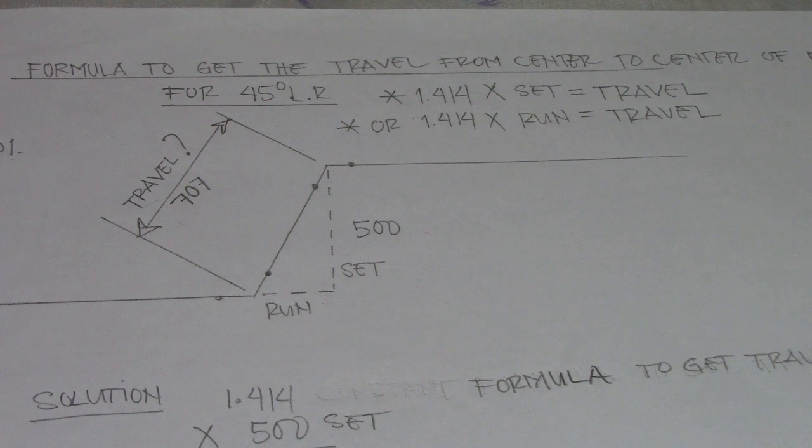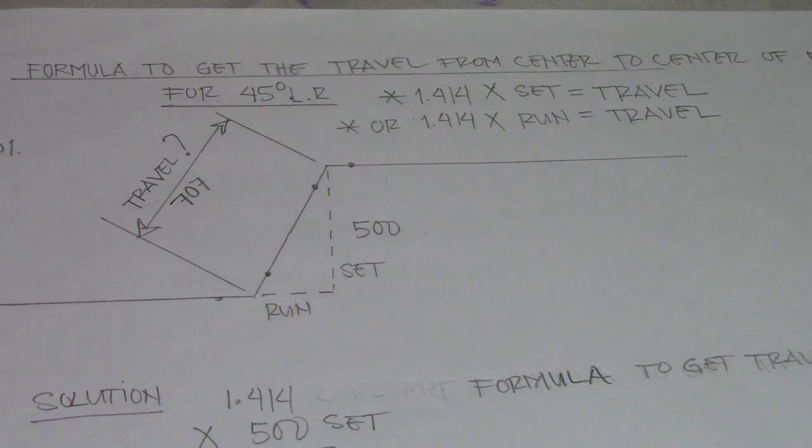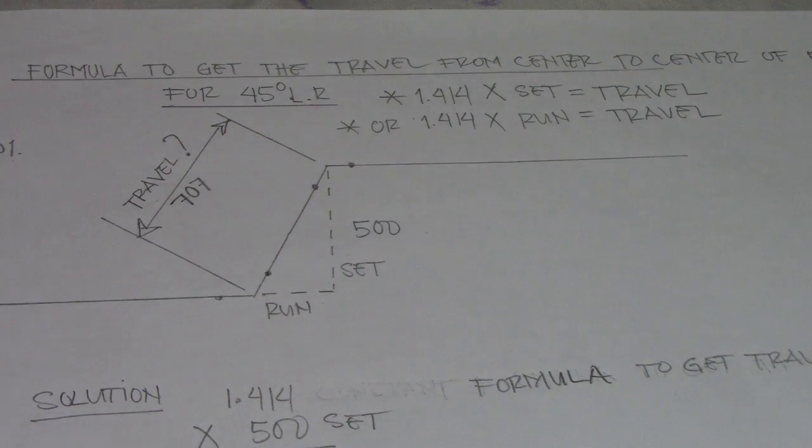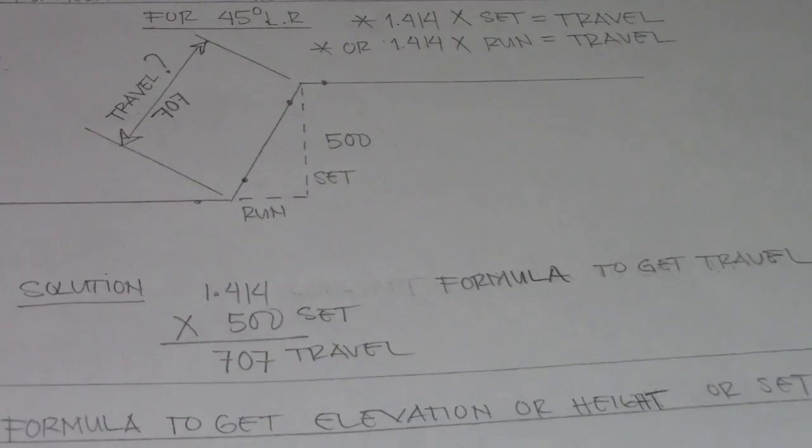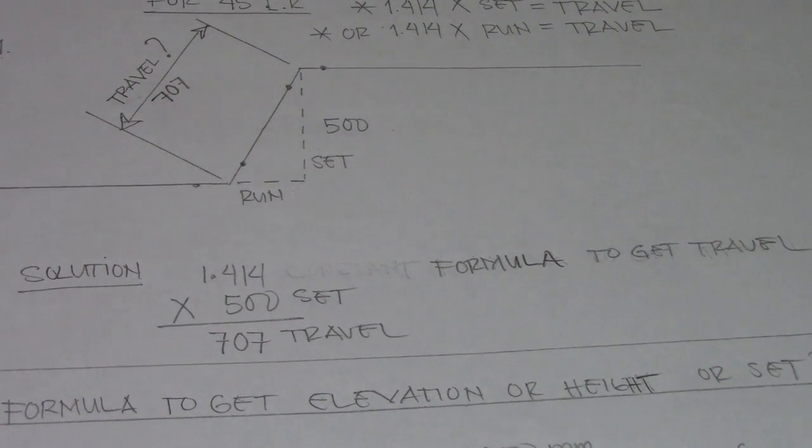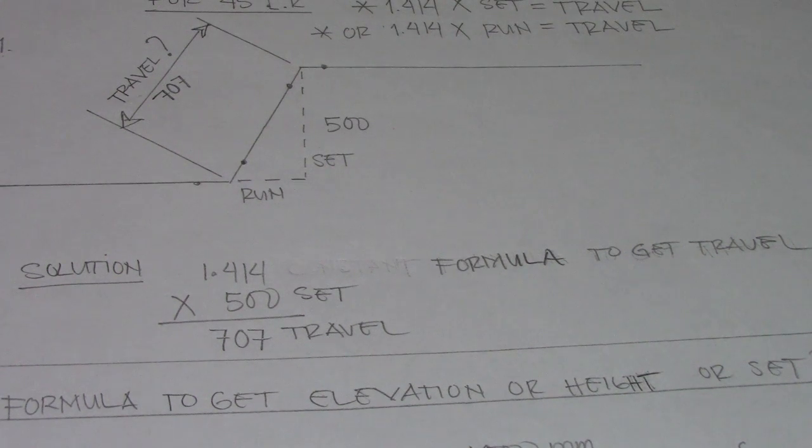So the answer: 1.414 multiply by set equals travel, which is 707. This is the answer. This is a very easy way to find the travel. Here is our solution: 1.414 multiply by 500 equals travel. This formula is only for 45 degrees, long radius.